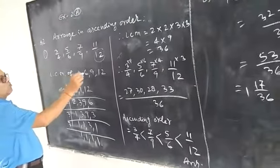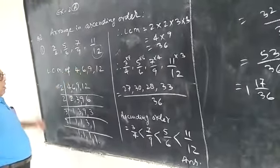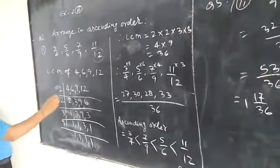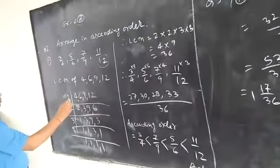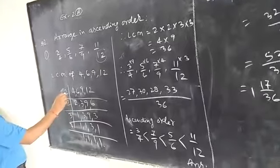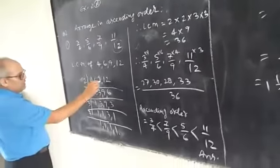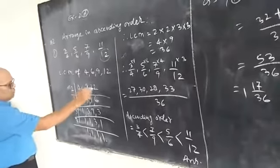LCM of 4, 6, 9, 12. It is divided by 2: 2 times 2 is 4, 2 times 3 is 6, 9 is not divisible, and 2 times 6 is 12.